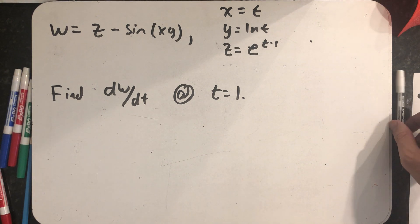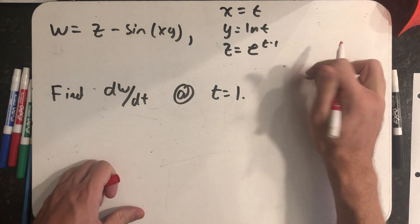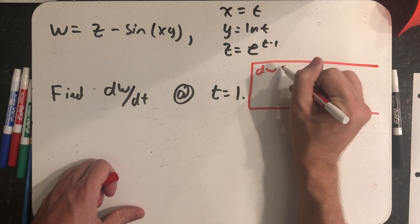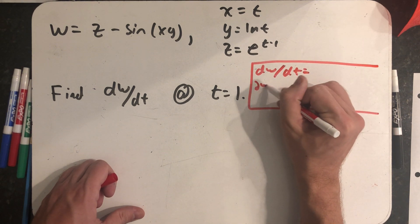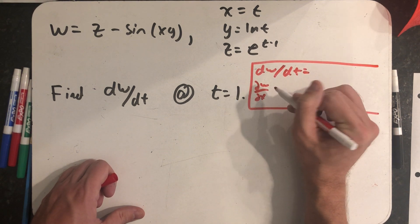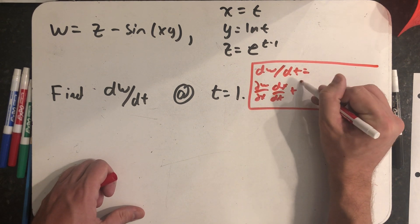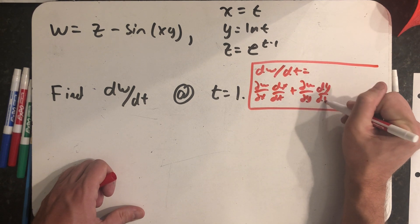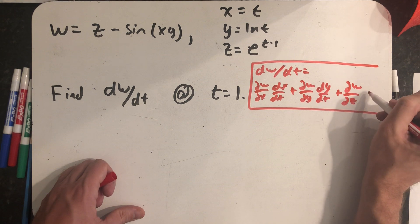So I'm going to use the chain rule that we just wrote down. dw/dt is equal to the partial of w with respect to x times dx/dt plus the partial of w with respect to y times dy/dt plus the partial of w with respect to z times dz/dt.